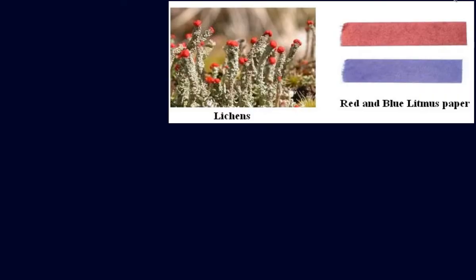We have red and blue litmus paper to check whether a substance is an acid or a base. The two commonly used litmus papers are red and blue, and they tell you whether the substance is acidic, basic, or neutral.